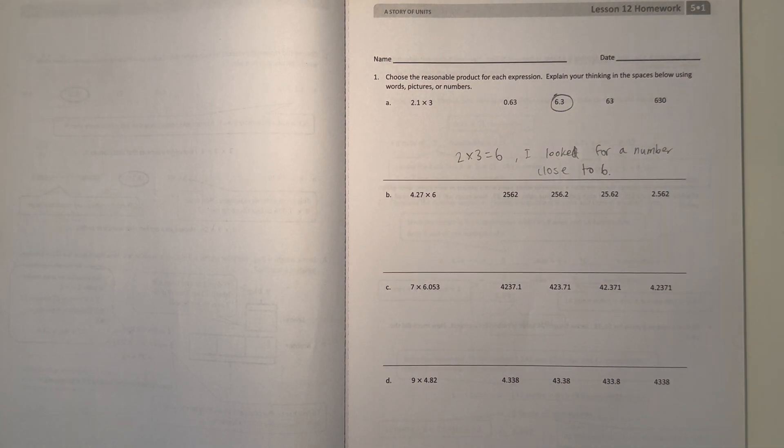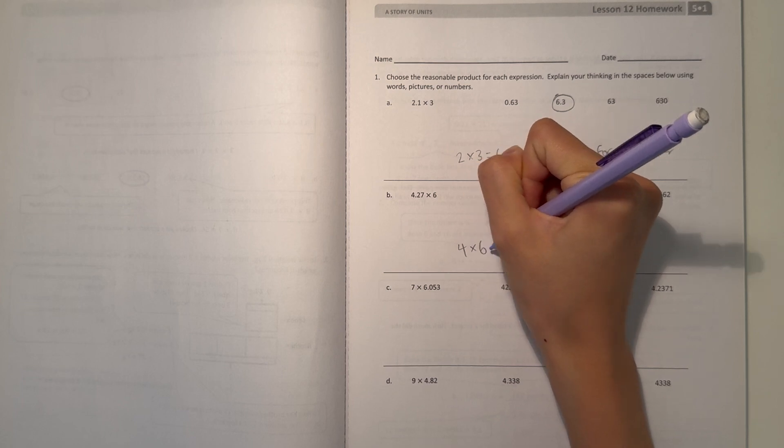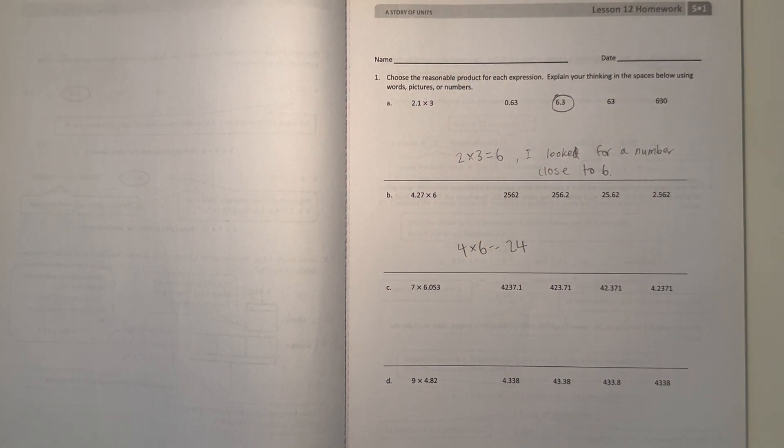Alright, and B, we have 4.27 times 6. 4.27 is kind of near 4. So we do 4 times 6, which is 24. So then we know our answer must be kind of close to 24.